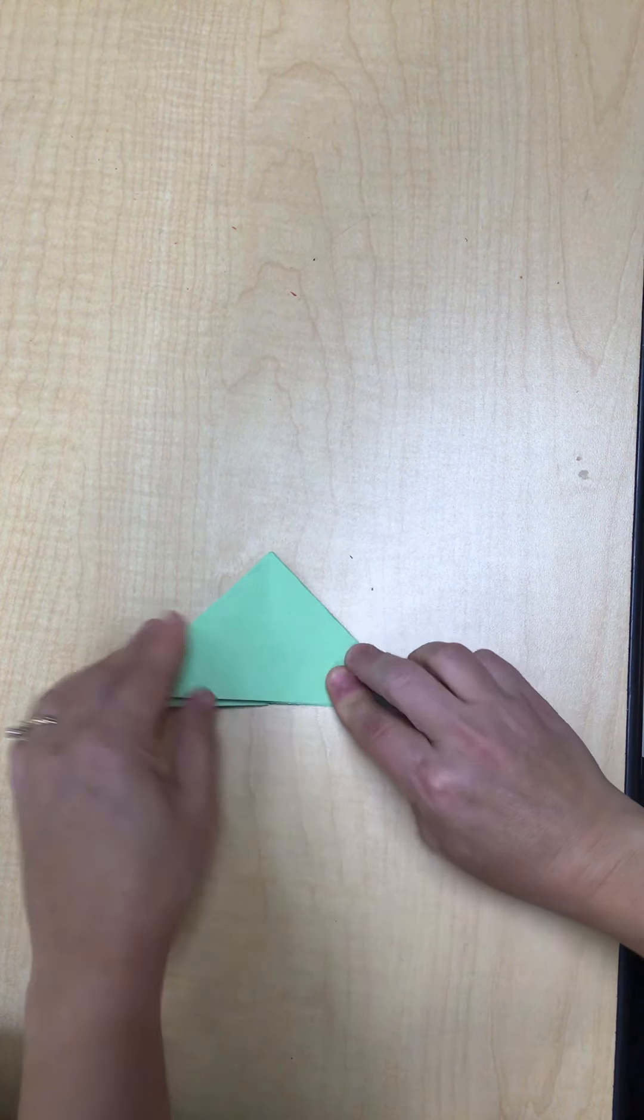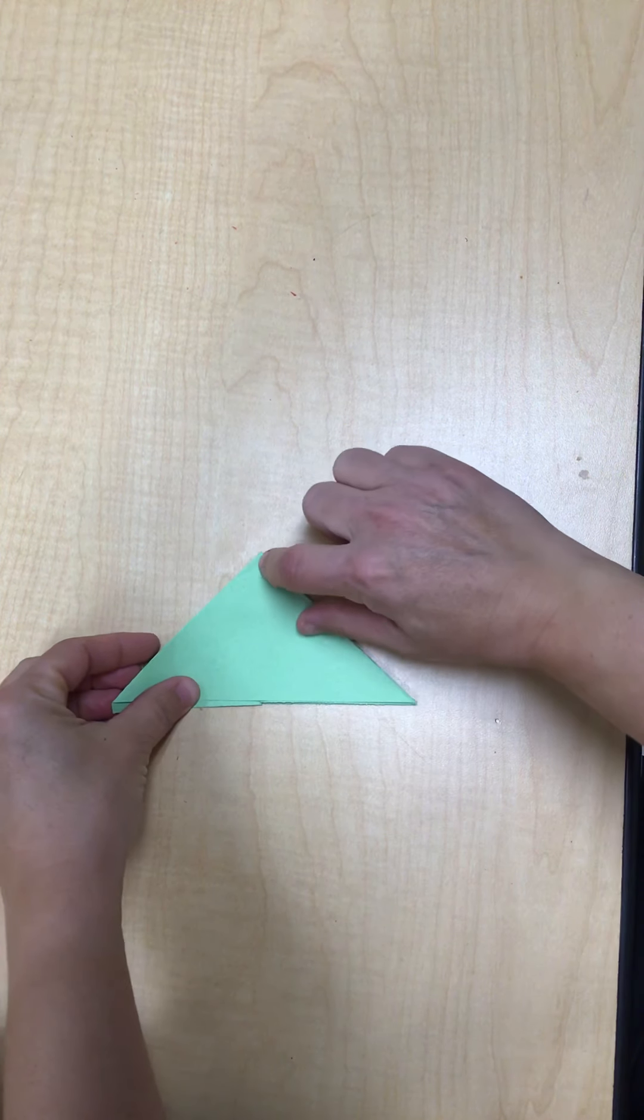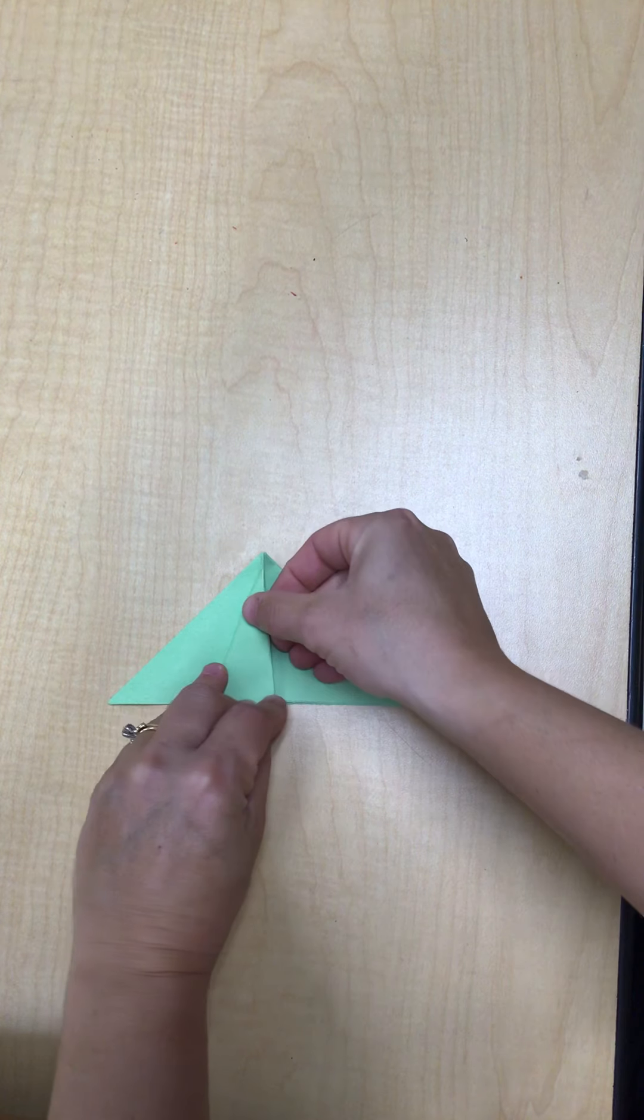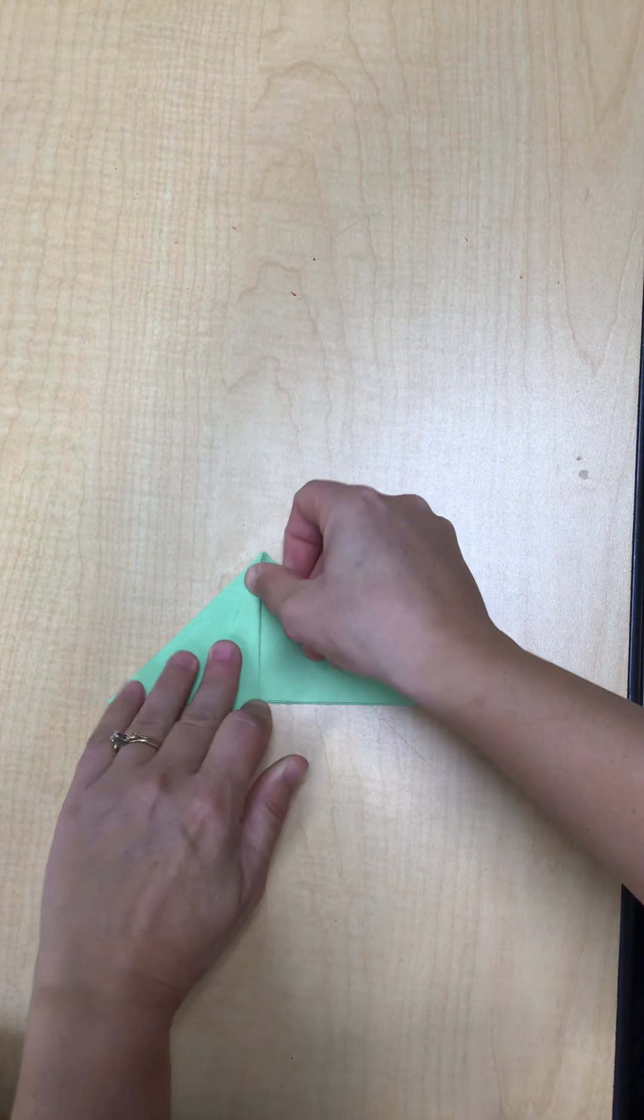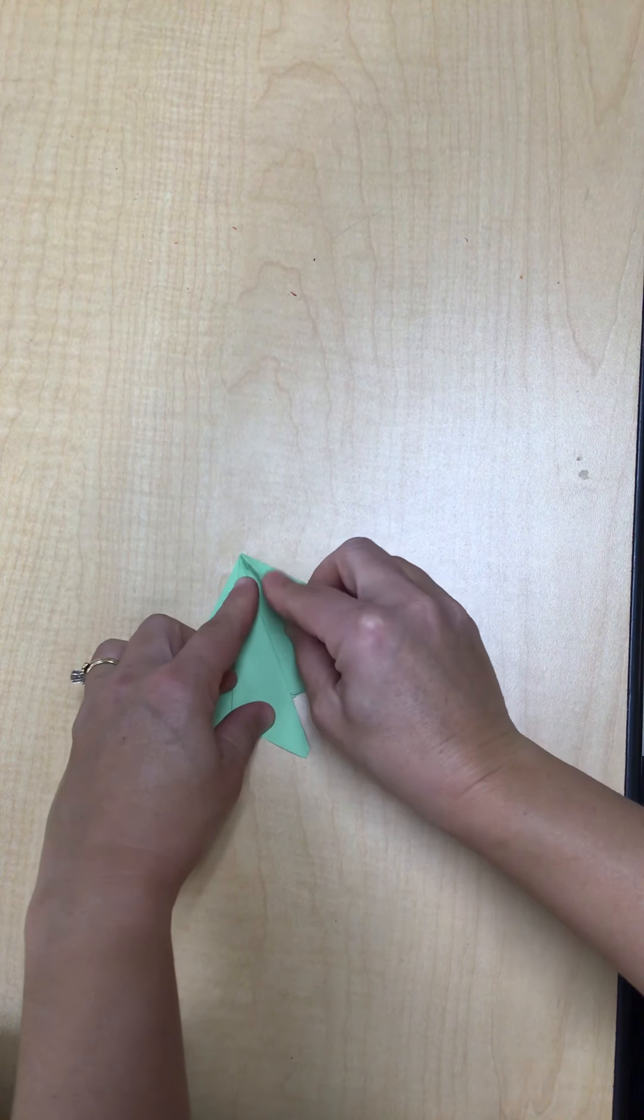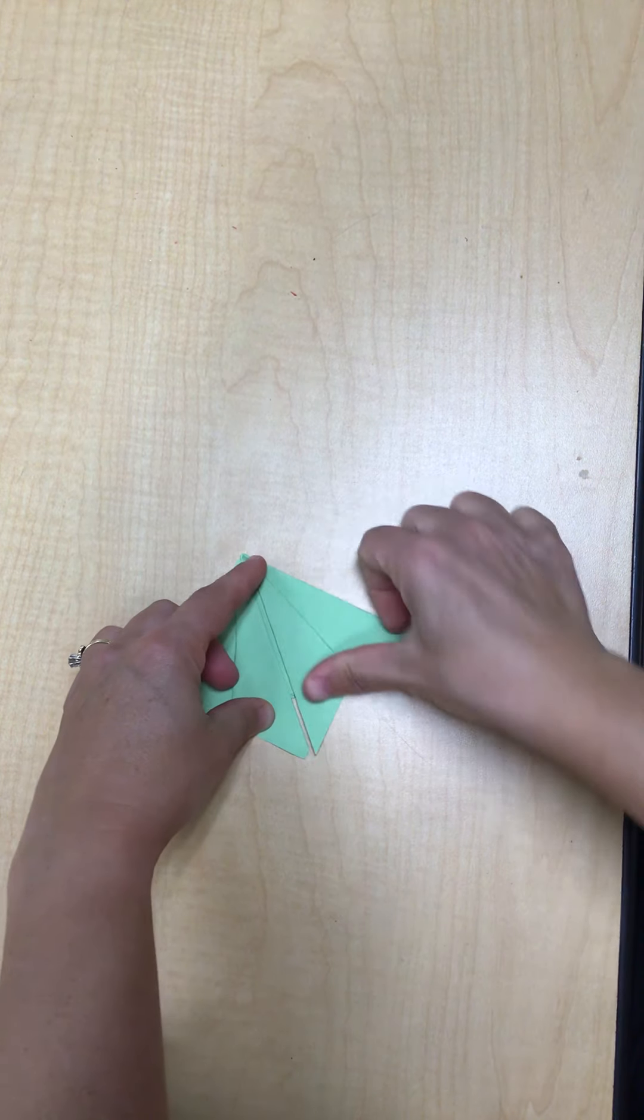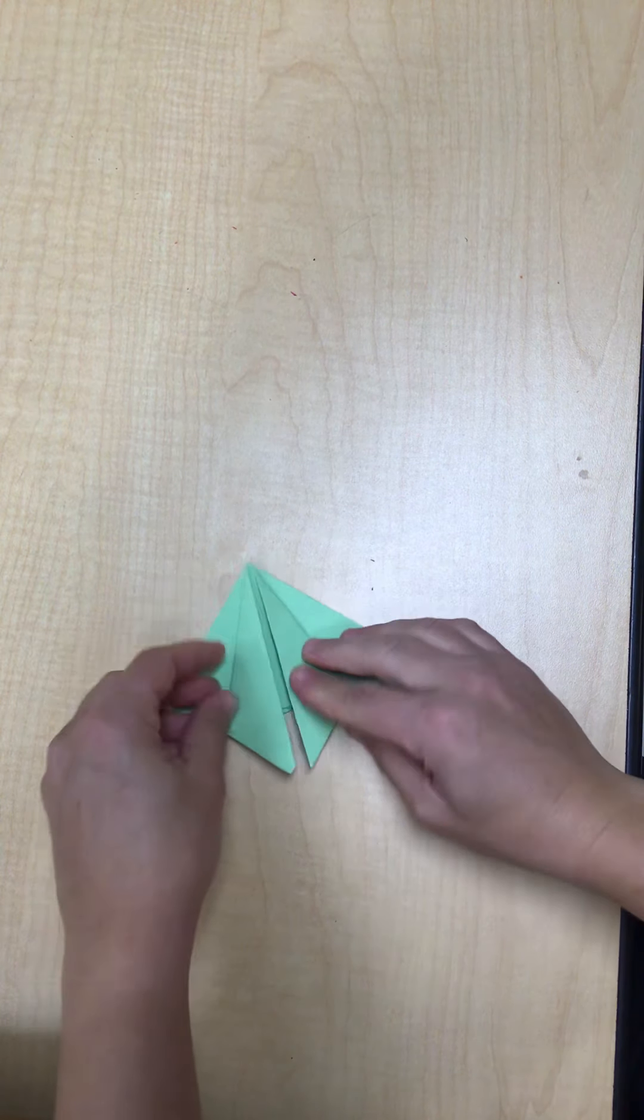Now pretend there's a line down the center of your triangle. You're going to fold towards the middle, just like fold three. Fold towards the middle.